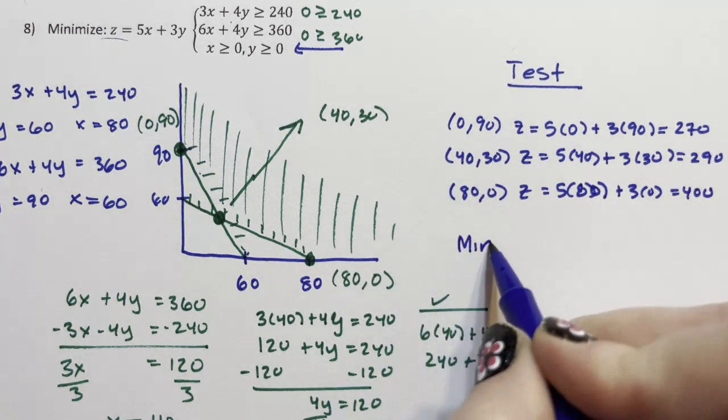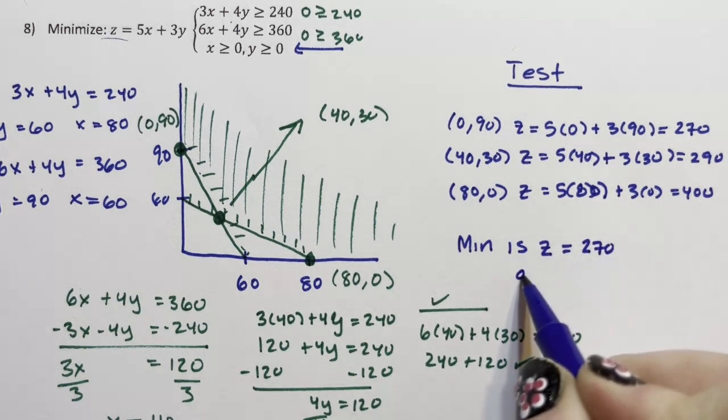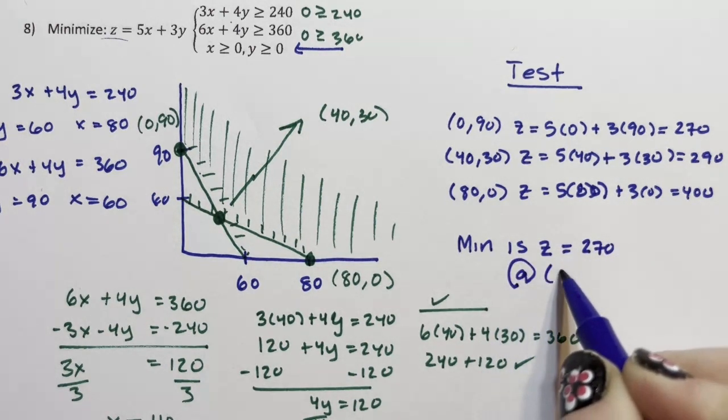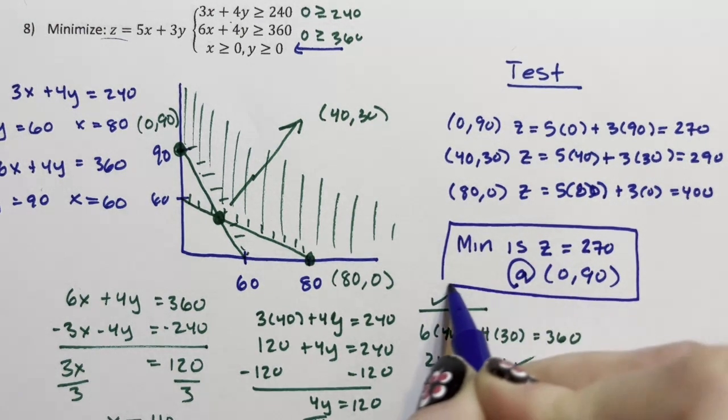And the minimum is right here. So the minimum is z equals 270 at 0, 90. So that's my answer.